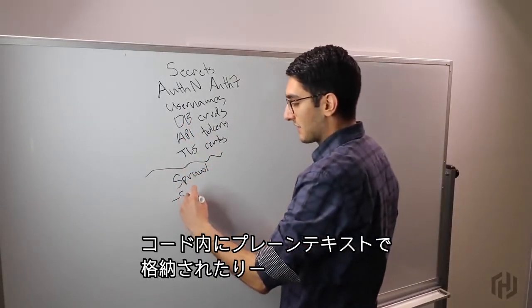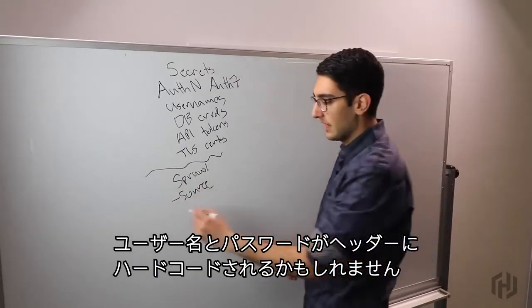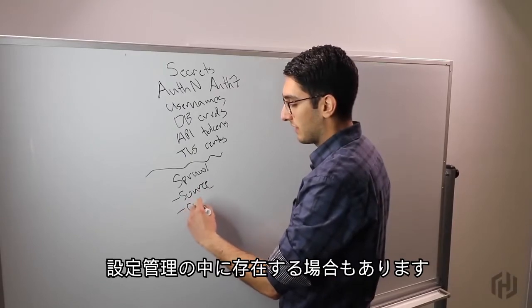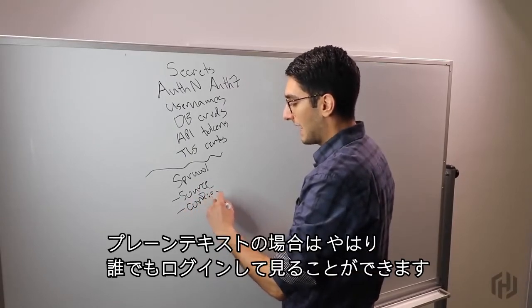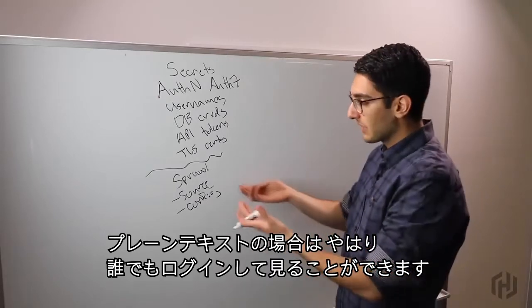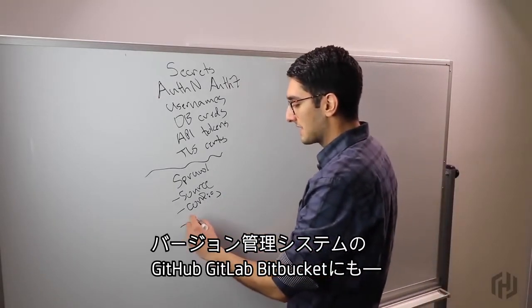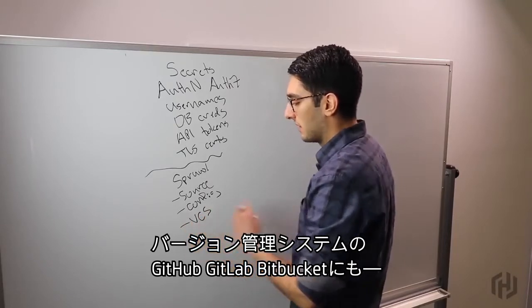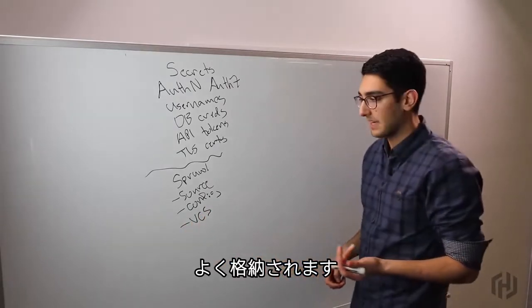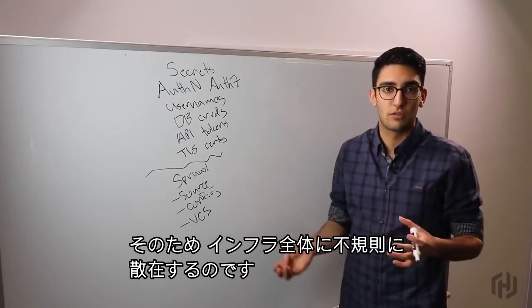What we mean by secret sprawl is that these end up everywhere. They're in plain text inside of our source code, maybe hard-coded in a header with the username and password. It ends up inside of things like configuration management, living in plain text in Chef or Puppet or Ansible. And ultimately, all of this typically ends up living in a version control system like GitHub or GitLab or Bitbucket.